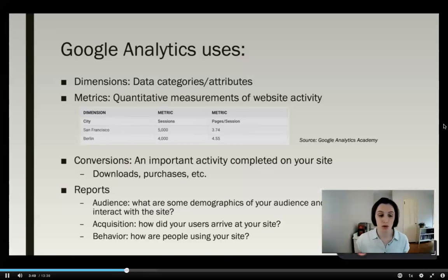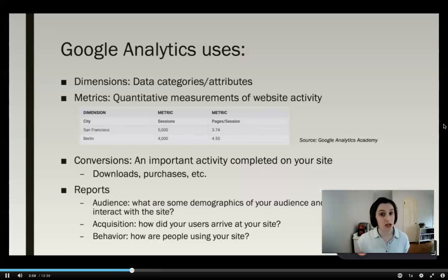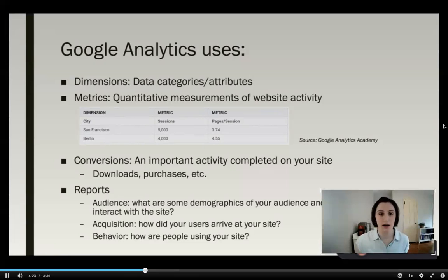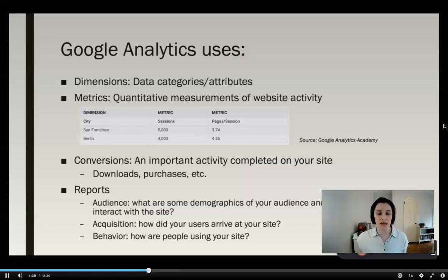You read data through things on the Google Analytics interface called reports. There are three main categories used most commonly: audience, acquisition, and behavior reports. Audience reports cover demographics of your audience and how they interact with the site. Acquisition reports show how users arrive at your site — through a Facebook ad, email link, or Google search. Behavior reports show how people are using your site: downloading things, watching videos, or visiting multiple pages.